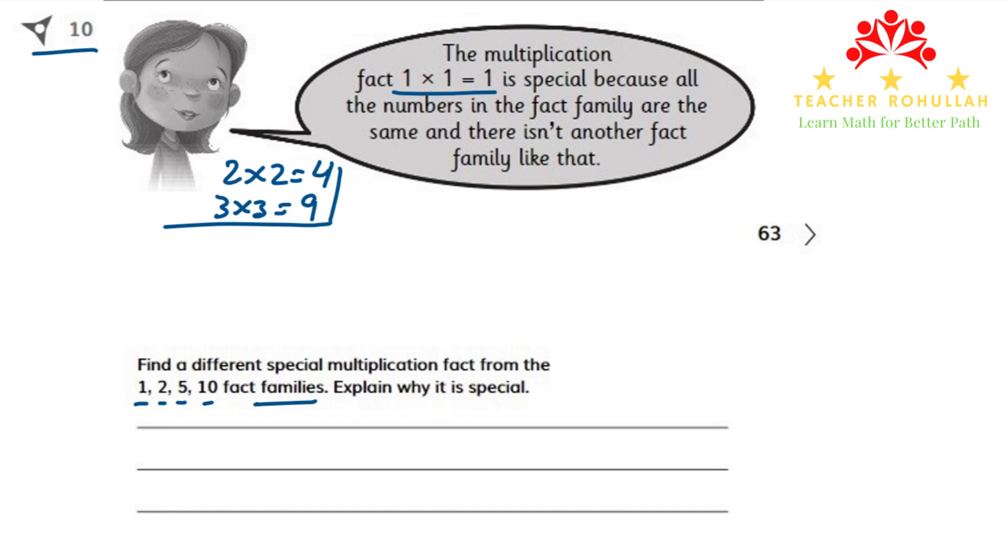To solve this problem, I will list some fact families using these numbers. If we multiply 1 by 2, we get 2. If we multiply 5 by 2, we get 10. And if we multiply 10 by 2, we get 50.